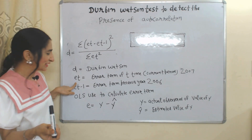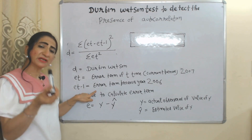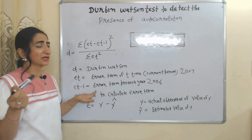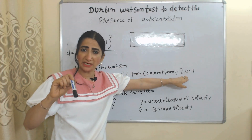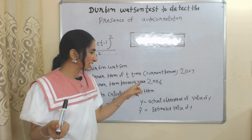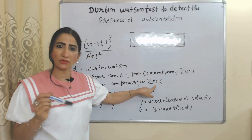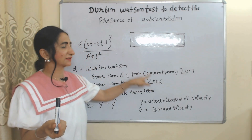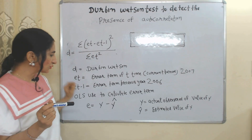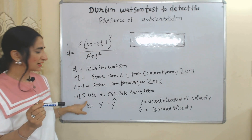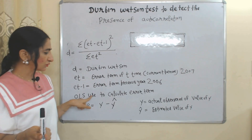e_t represents the error term of the current period, and e_{t-1} represents the error term of the previous period. For example, if the current period is 2007, then e_{t-1} is the error term of 2006. If the value of e_t is not given, you can calculate it using OLS.